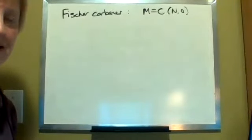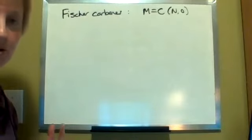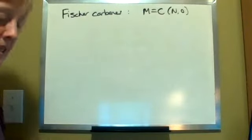Moving on to the section on carbenes, we're going to be talking about two different types: Fischer carbenes and Schrock carbenes. Schrock carbenes are also known as alkylidenes.